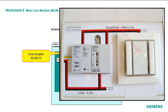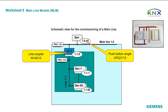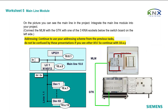The given scheme is only an example based on the assumption that someone has used line 1.1 so far. If you are using a different line, make sure to adopt the given figures. You can see the main line in the project picture. Integrate the main line module into your project and connect it with the Gamma training kit. Add one of the three KNX sockets below the switchboard on the left side. Continue to use your addressing scheme from the previous tasks — do not be confused by other individual addresses shown; continue with 10.x.y.